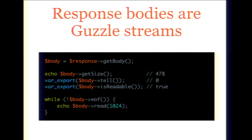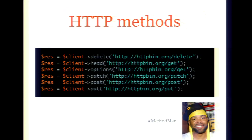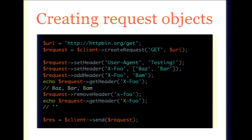When sending requests through a client, all HTTP methods are available — put, post, delete, everything you need. If you need a custom method that's not listed, you can create a request object using the createRequest method of a client. Here we're creating a GET request. You can set headers on the request and build it up — for example, passing it around to different collaborators that modify it before it's sent. You can set headers, add headers, remove headers. When you're done building your request object, call send, passing the request to the client's send method, which returns a response object.